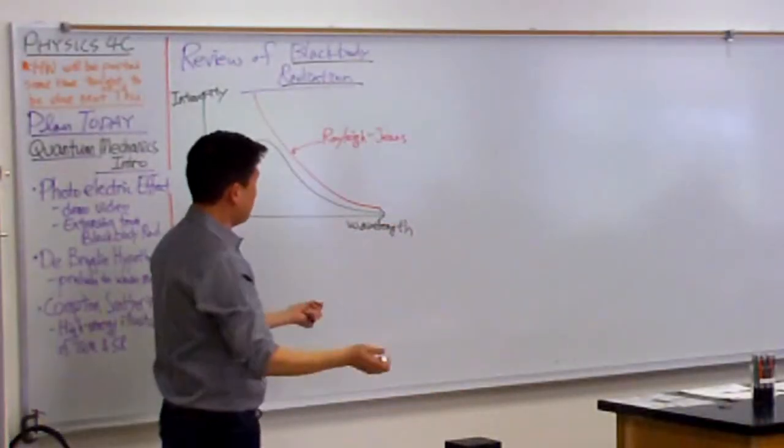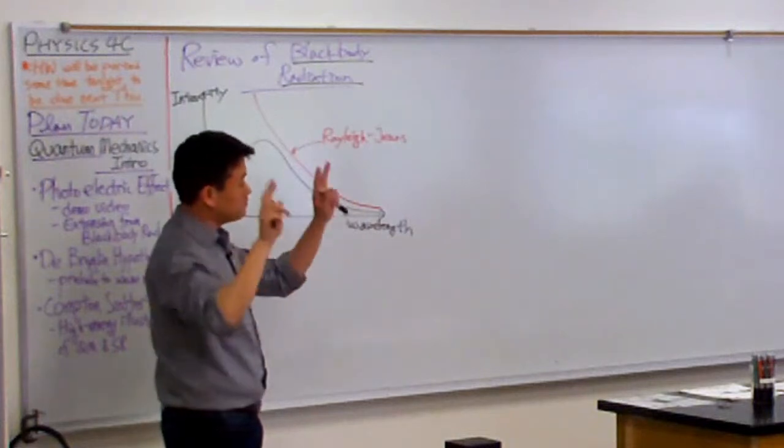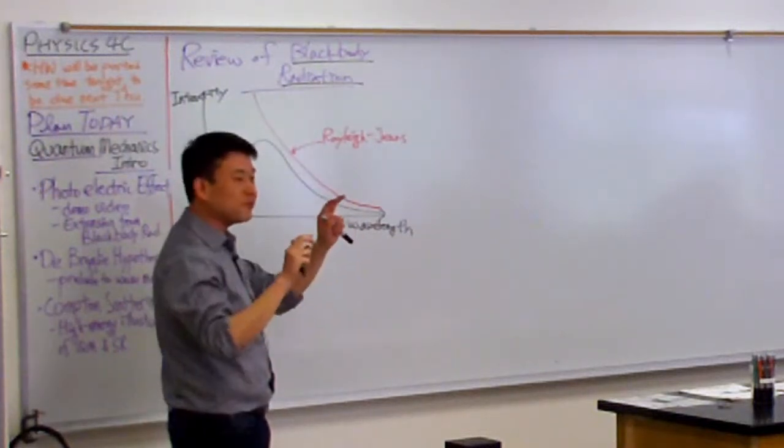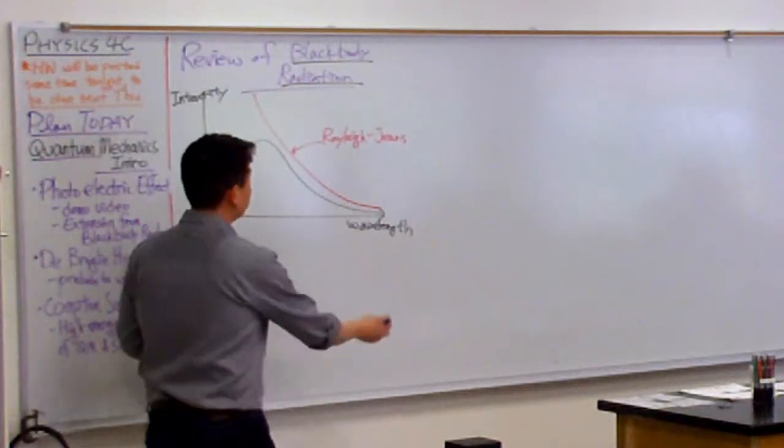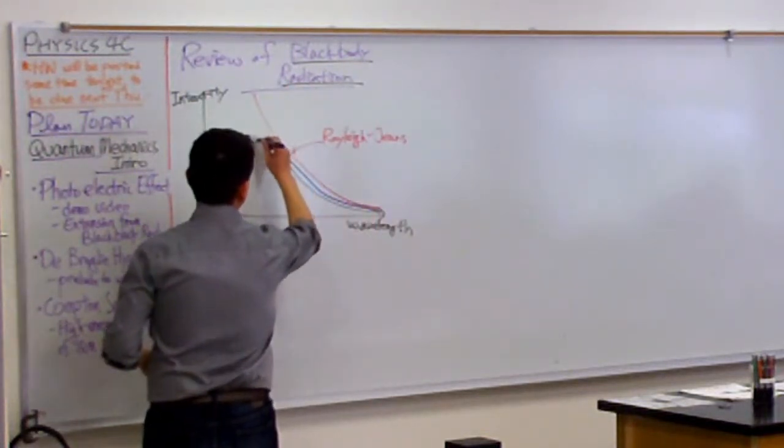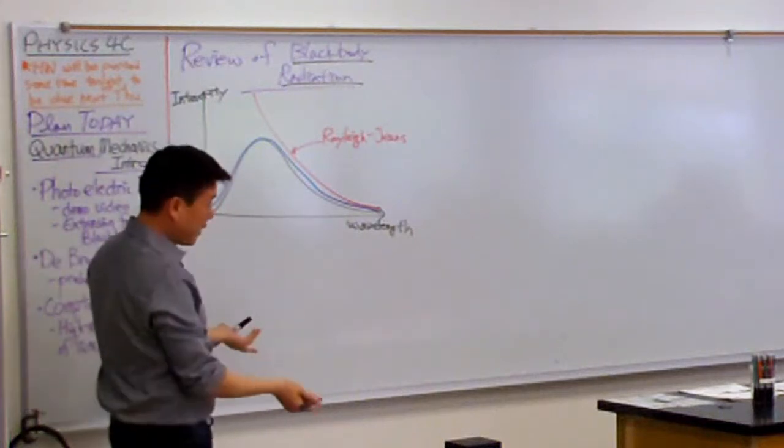The Planck's black body radiation law is what actually led to the correct prediction. I put quotation around the prediction because it's not a prediction at all. It's something that everyone knew. Planck law is the one that actually fits to the experimental curve correctly.